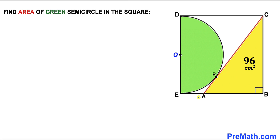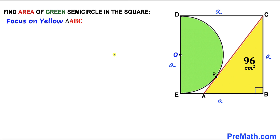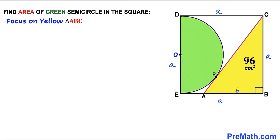We know that we are dealing with square EBCD. I'm going to label its side length as A, so all four sides are A. Now let's focus on the yellow triangle ABC. This side length is A, and I'll call the other side length lowercase b. We know the area has been given to us as 96.